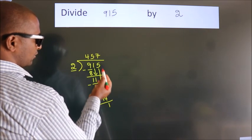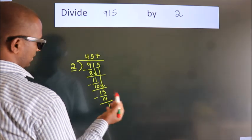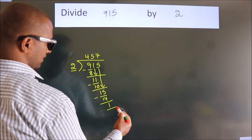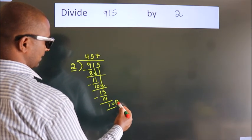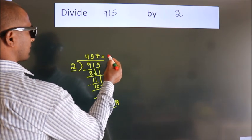After this, no more numbers to bring down. So we stop here. This is our remainder. This is our quotient.